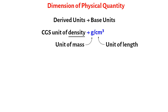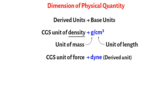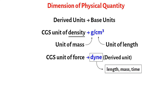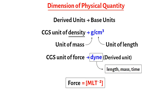On the other hand, if we take the CGS unit of force, dyne, which is a derived unit, the relationship of the dyne to the base units of length, mass, and time is not directly understood. For this, it is necessary to know how force as a physical quantity relates to length, mass, and time. This relation is known as the dimension of the physical quantity.